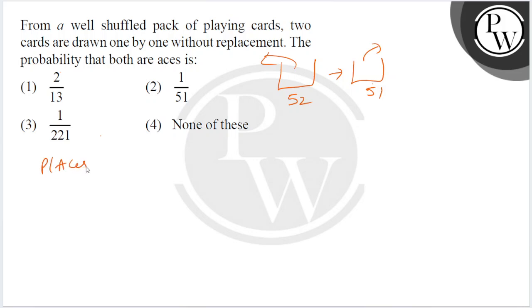The probability that both are aces - two aces will go. First one ace will go, and second also ace.